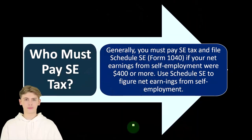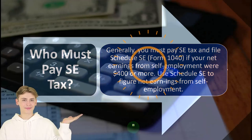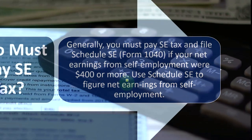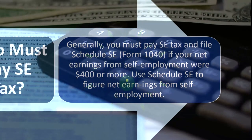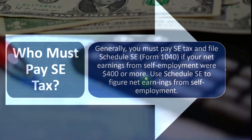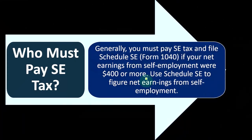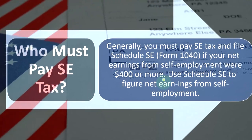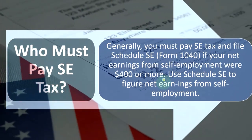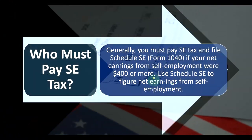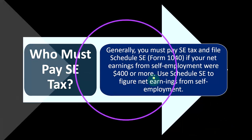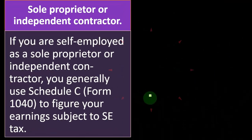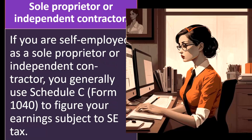Who must pay the self-employment tax? Generally, you must pay SE tax and file Schedule SE (Form 1040) if your net earnings from self-employment were $400 or more. If you have a loss on your Schedule C, you won't owe self-employment tax. The net income from Schedule C is the starting point to calculate Social Security and Medicare — similar to how a W-2 employee's wages are the basis for payroll taxes. Use Schedule SE to figure net earnings from self-employment.